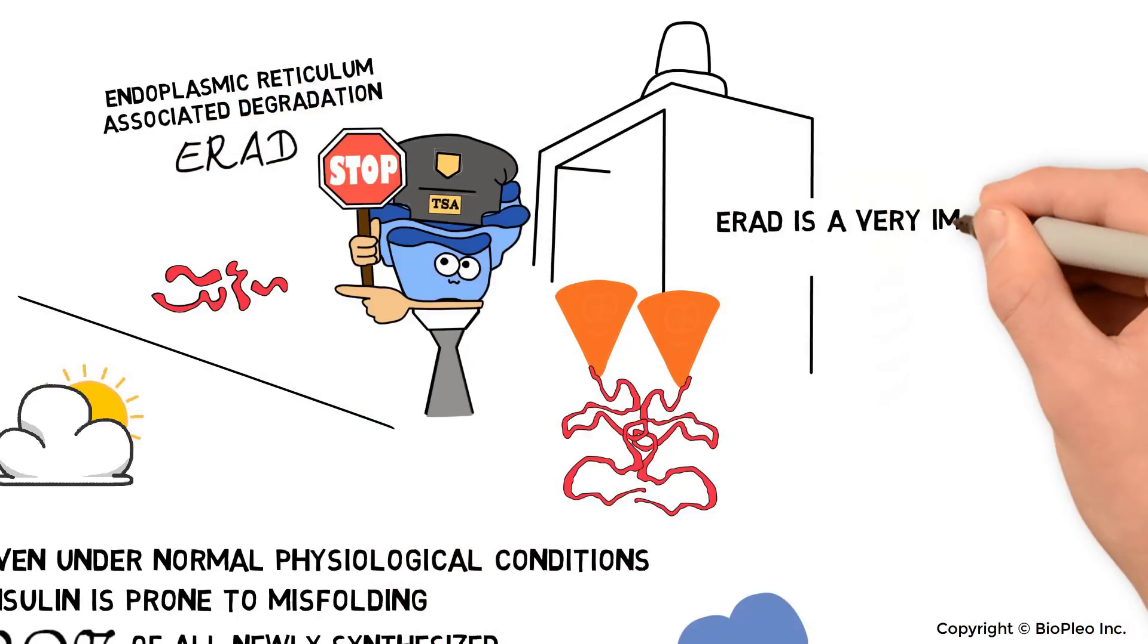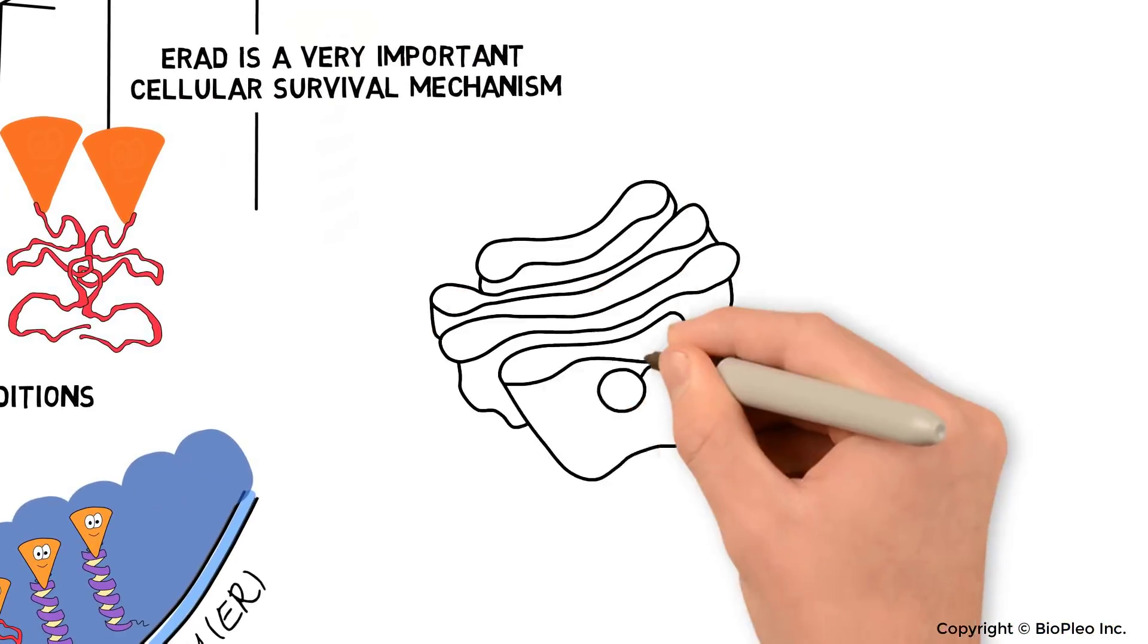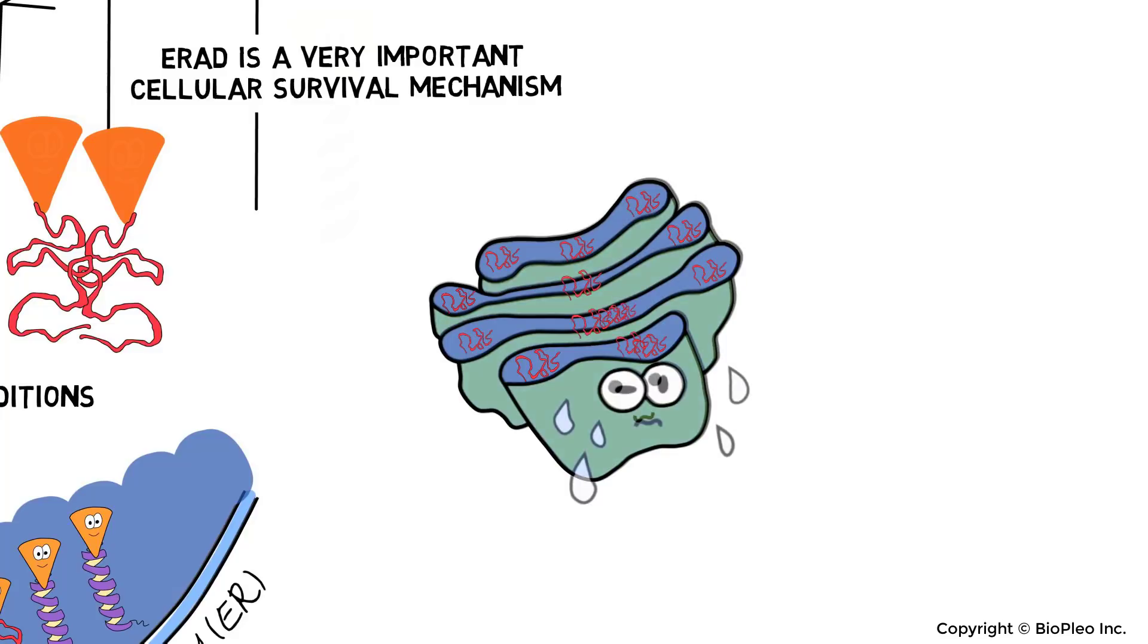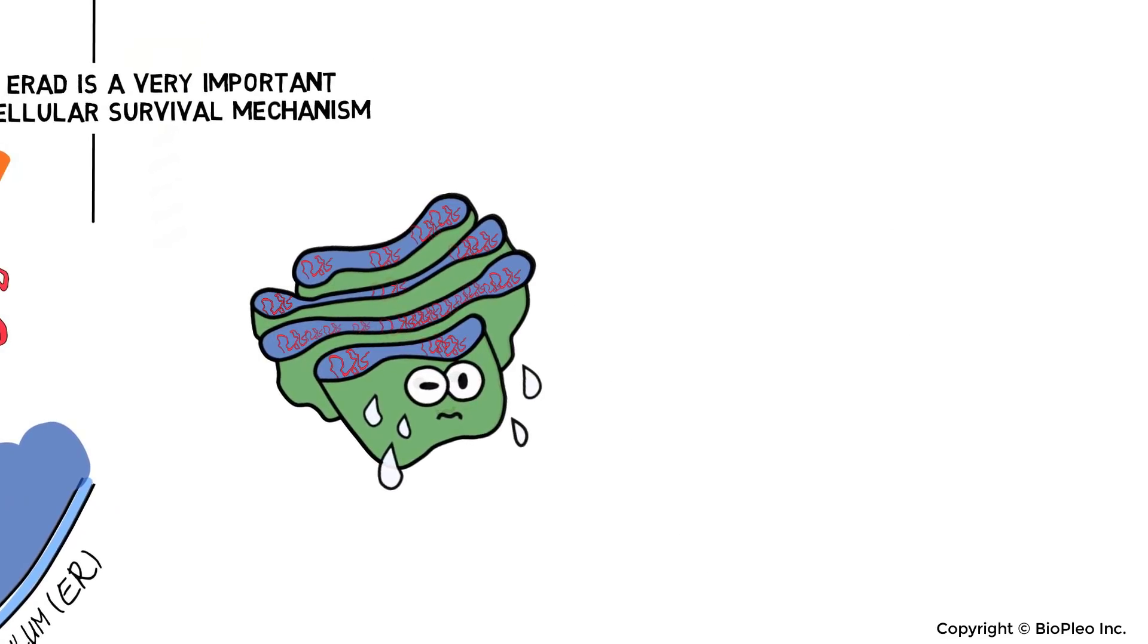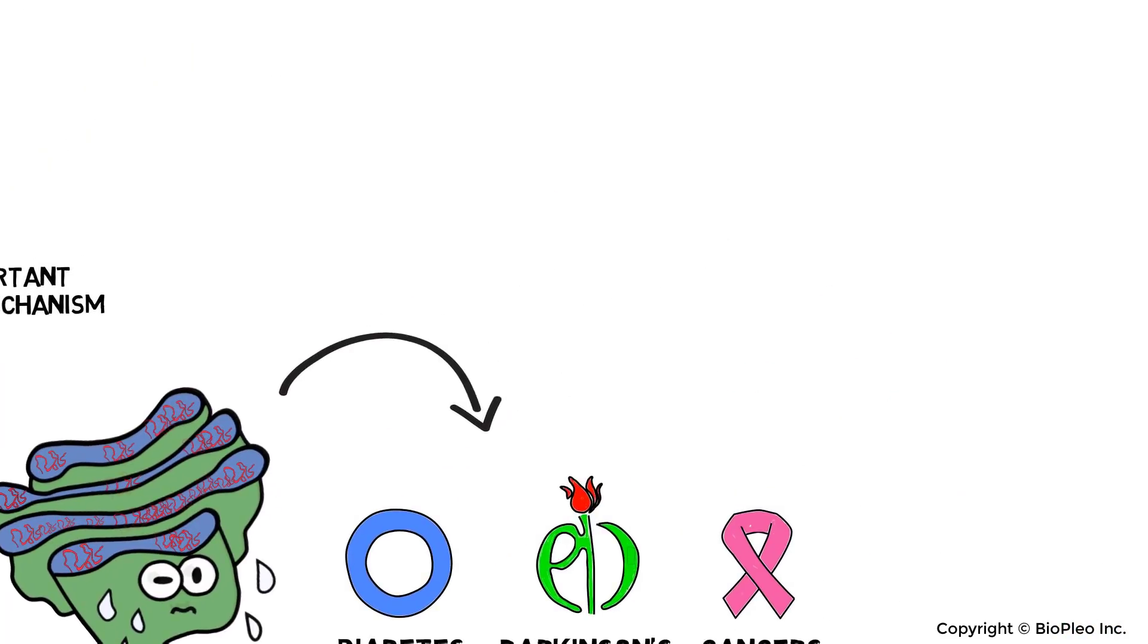ERAD is a very important cellular survival mechanism. If misfolded proteins overwhelm the ERAD, they accumulate in the ER, and the resulting stress eventually causes diabetes, Parkinson's, and cancers.